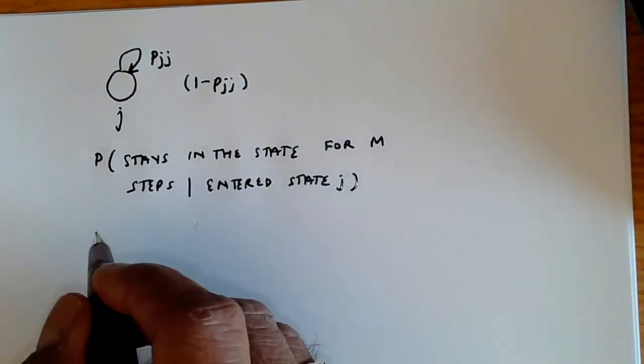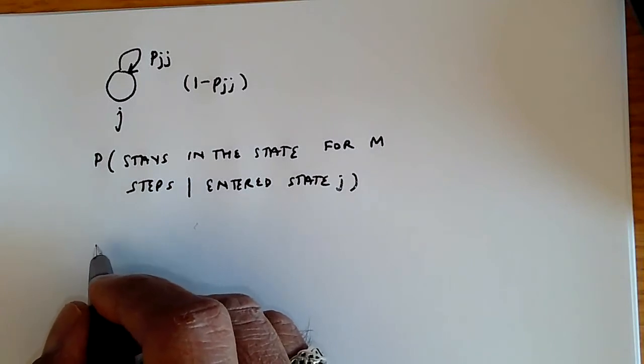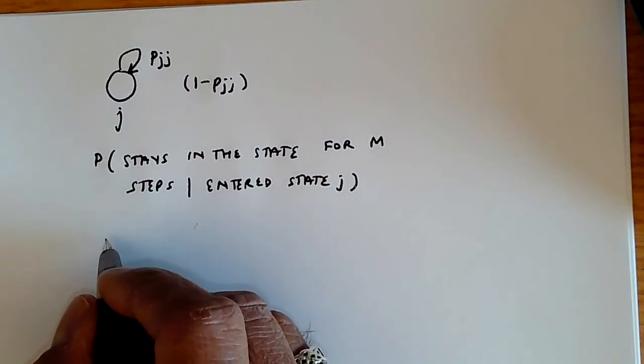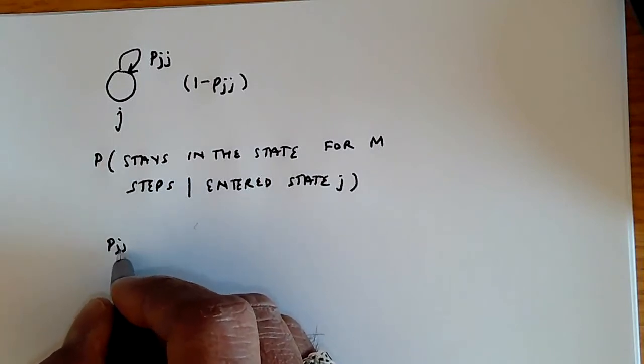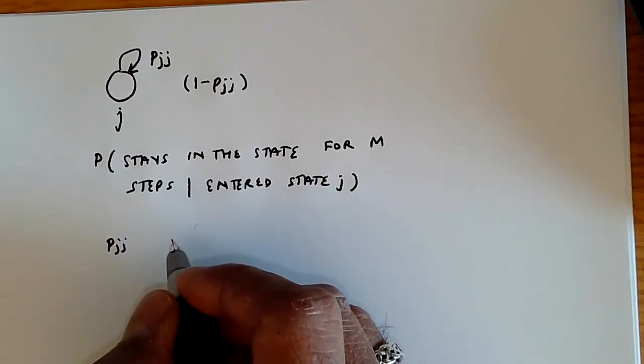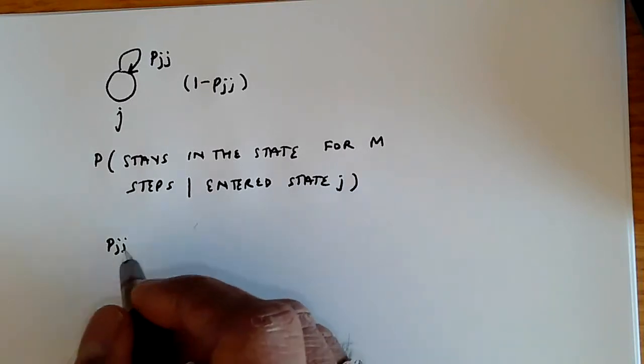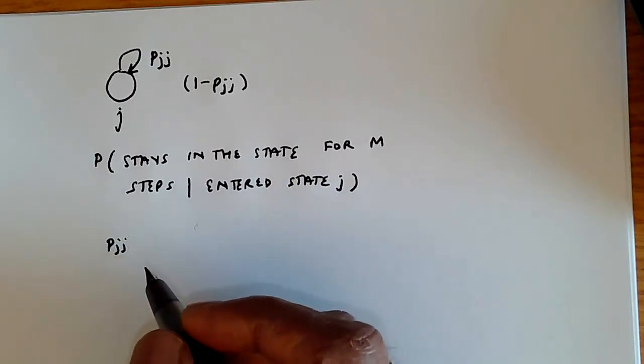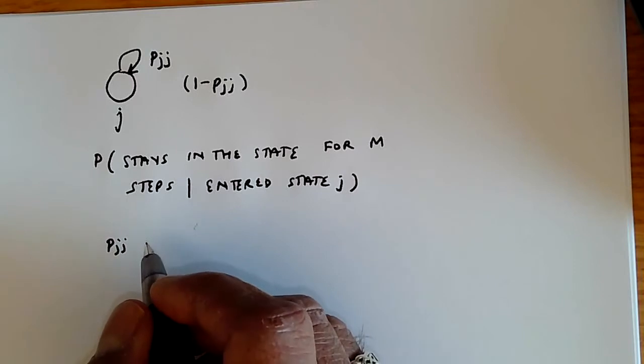Well, how do we say that? The probability that it stays for one time step is pjj. But after one time step, the probability is going to be pjj again, because of the Markov property. It has no memory of how it got there.